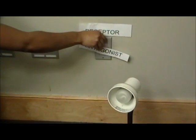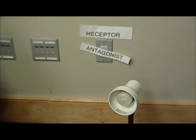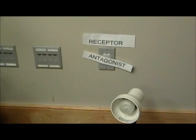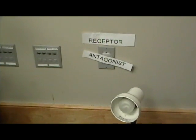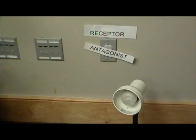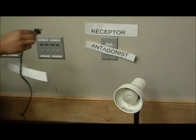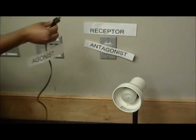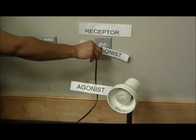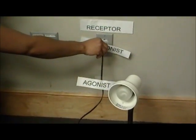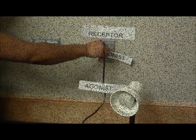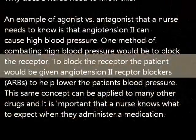An example of an antagonist is the angiotensin II receptor blocker. It blocks angiotensin II from binding to its receptors on the cells. So angiotensin II comes in and can't bind because our blocker is in the way, and we have no light.